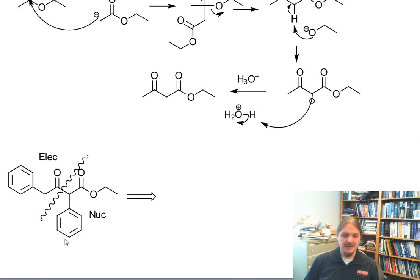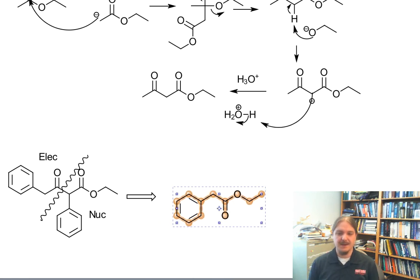And so the nucleophile actually looks like the original ester, but it's been deprotonated. And the electrophile looks like the original ester except the alkoxy group has been substituted by the nucleophile. And so here is our ethyl phenyl acetate, which is the ester that went into this Claisen reaction.